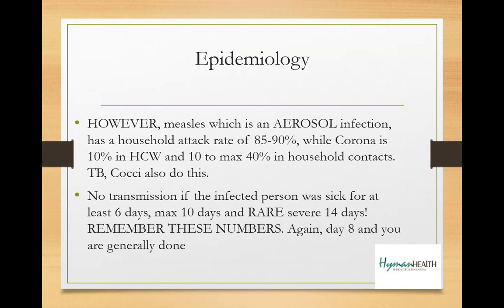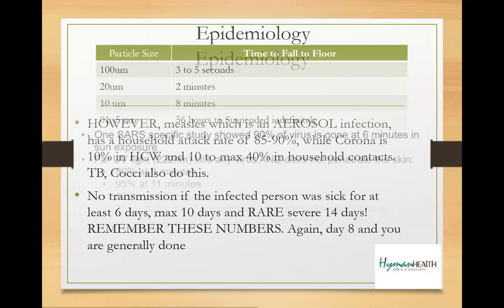There is no transmission if the infected person was sick for at least six days, maximum ten days; it's rare only if severe at 14 days. Remember these numbers when looking at a claim or trying to figure out exposure. If somebody gets sick, they'll be transmitting virus initially, but it drops off very quickly. The large droplets — the ones carrying most of the virus — fall to the floor in three to five seconds.